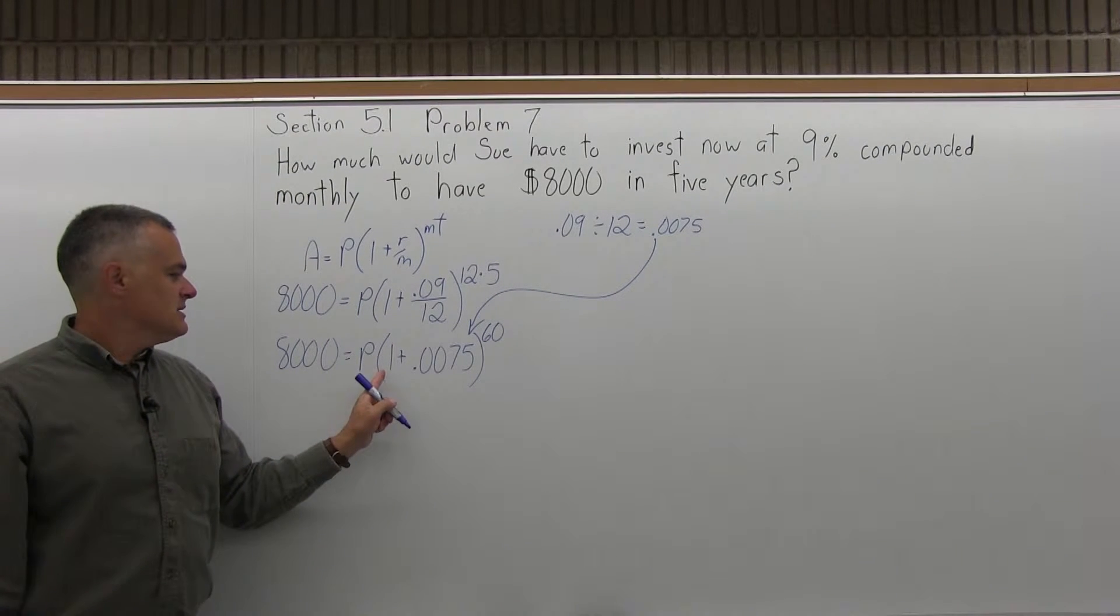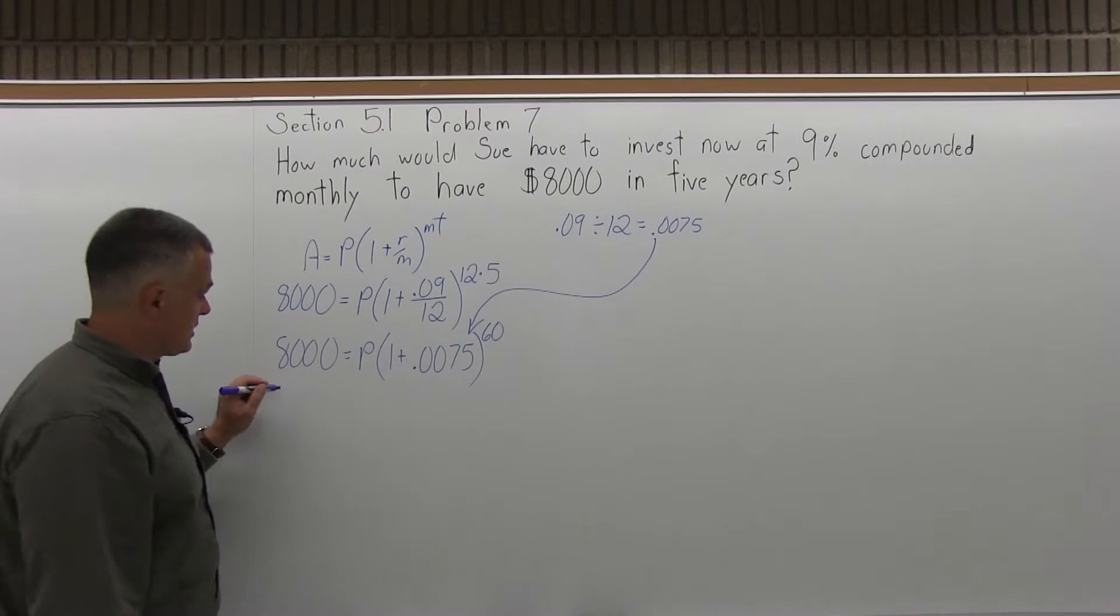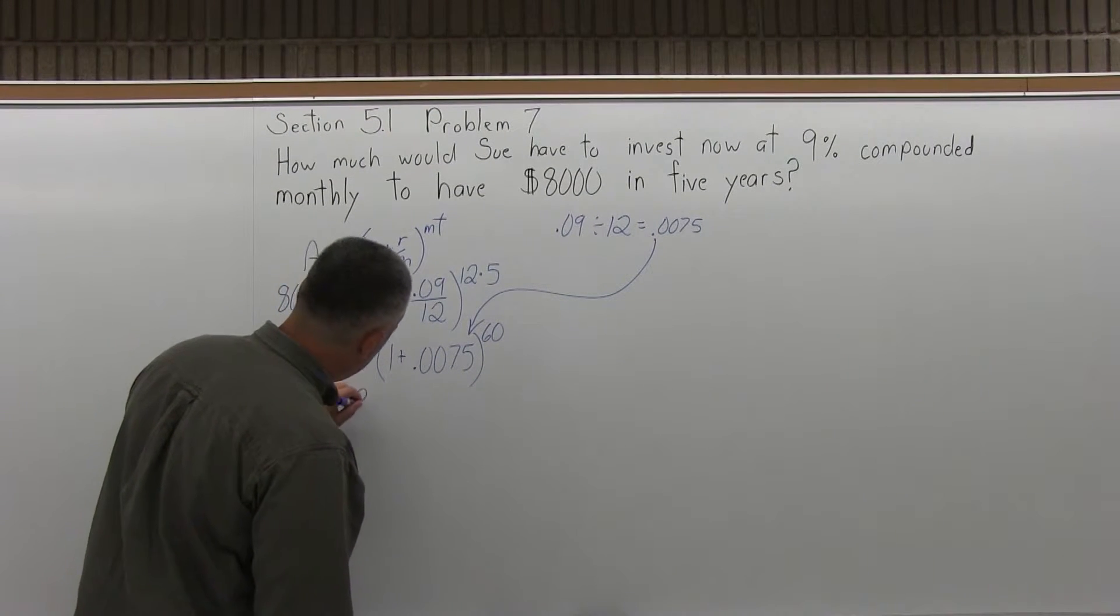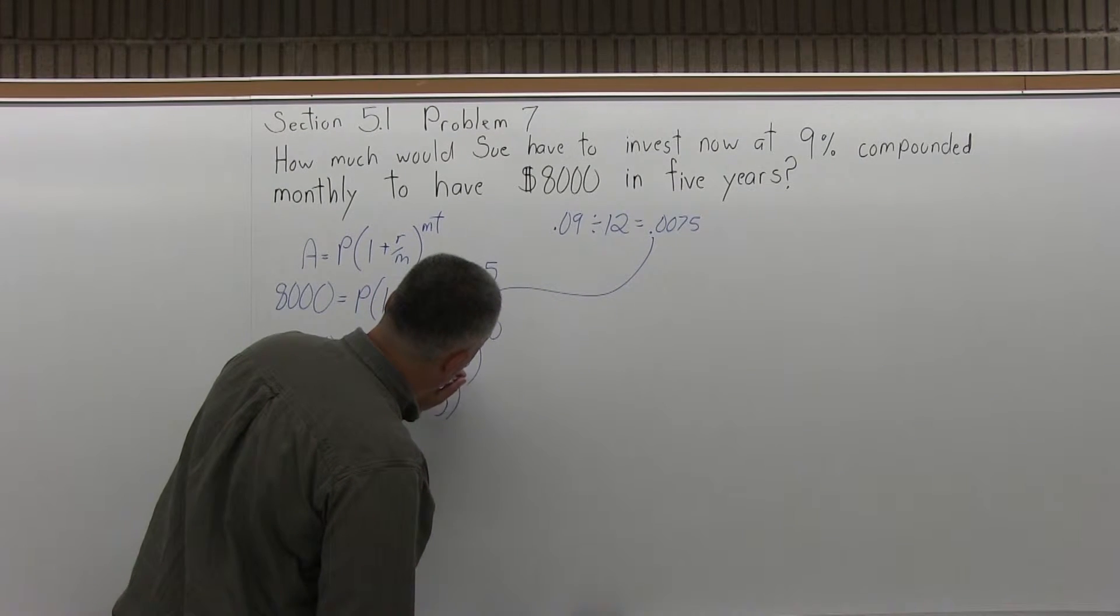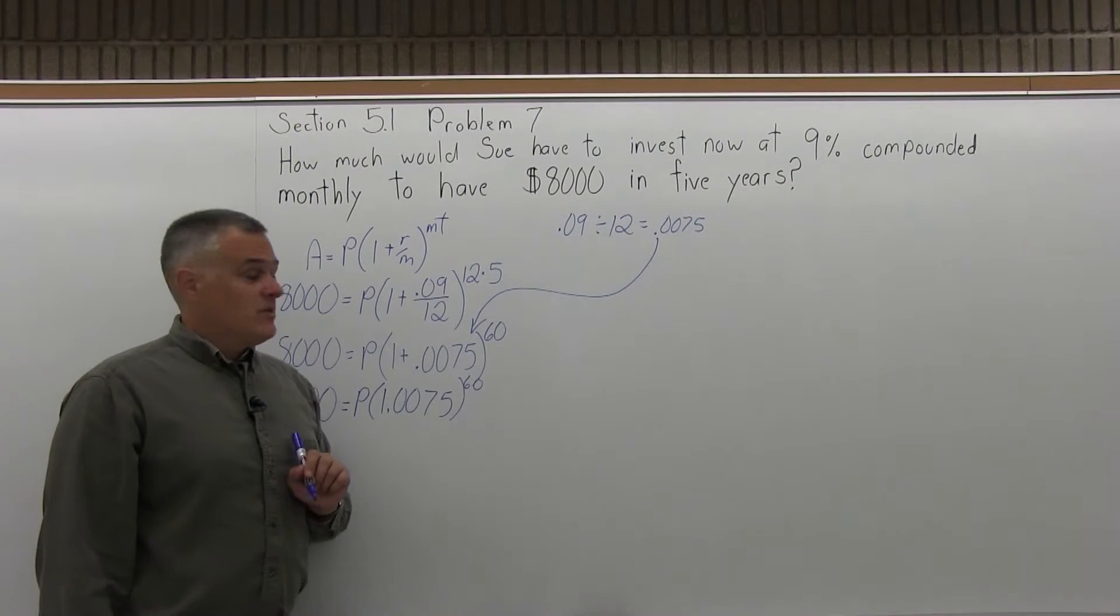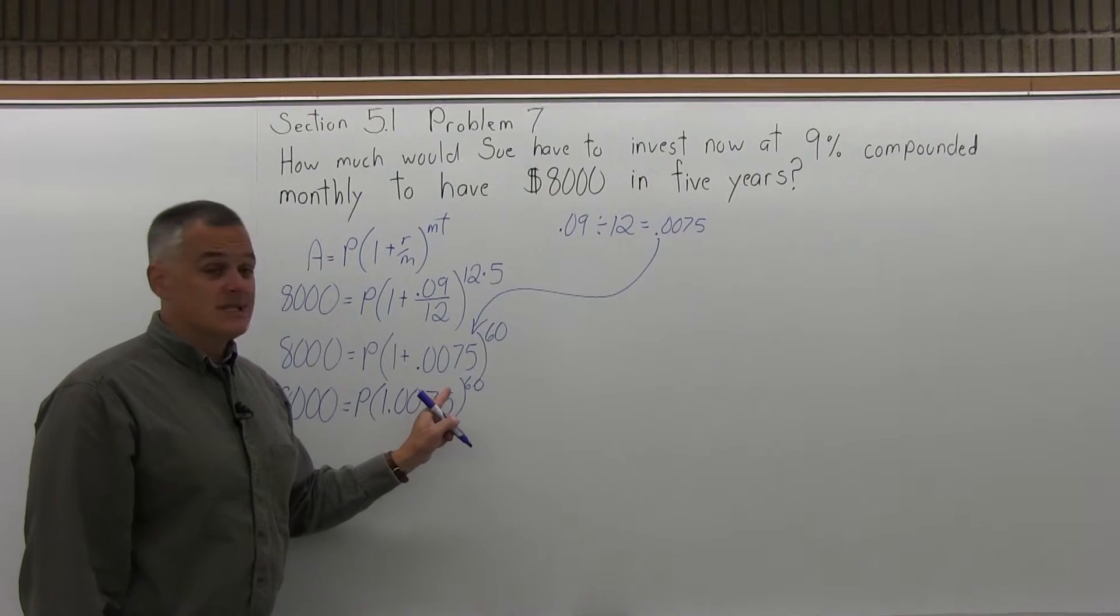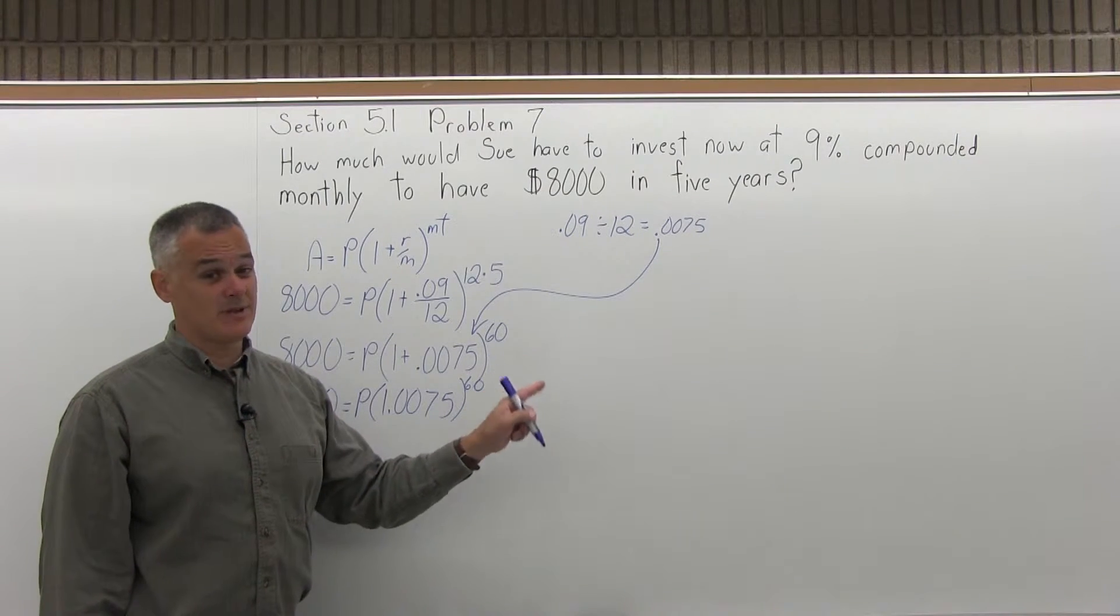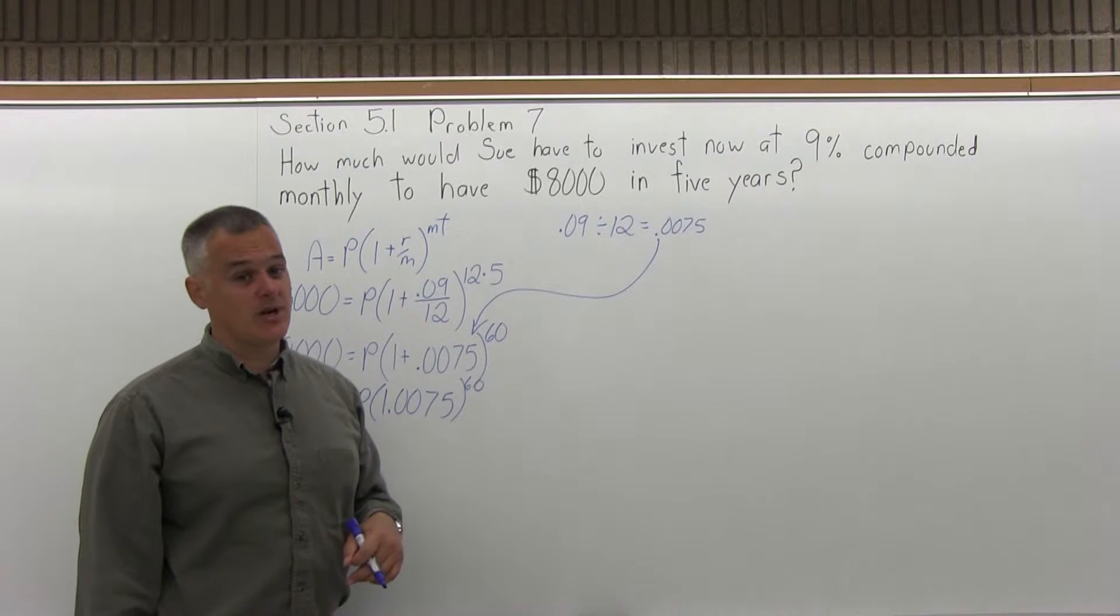Now to finish my parentheses, I have to add 1 plus .0075, which I can do easily. So I have 8,000 equals P times in parentheses 1.0075, and I have an exponent of 60. So the next thing I need to figure out is that exponent. So I have to do 1.0075 to the 60th power. That's 1.0075 times 1.0075 times 1.0075, et cetera.